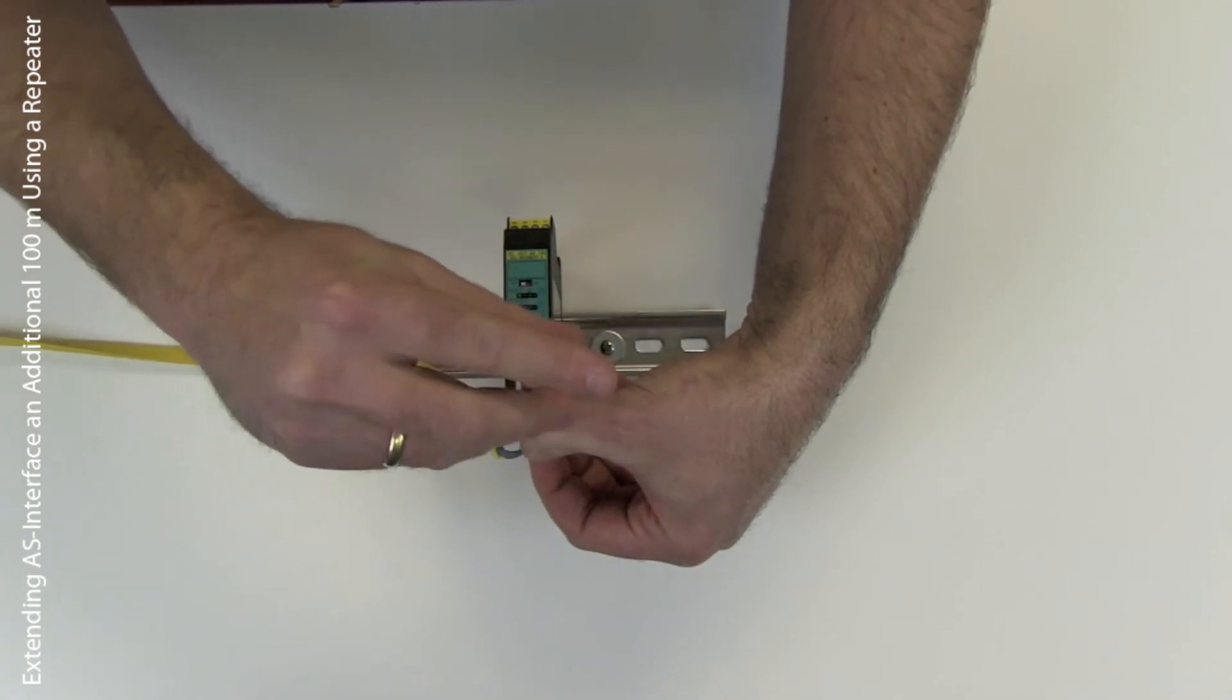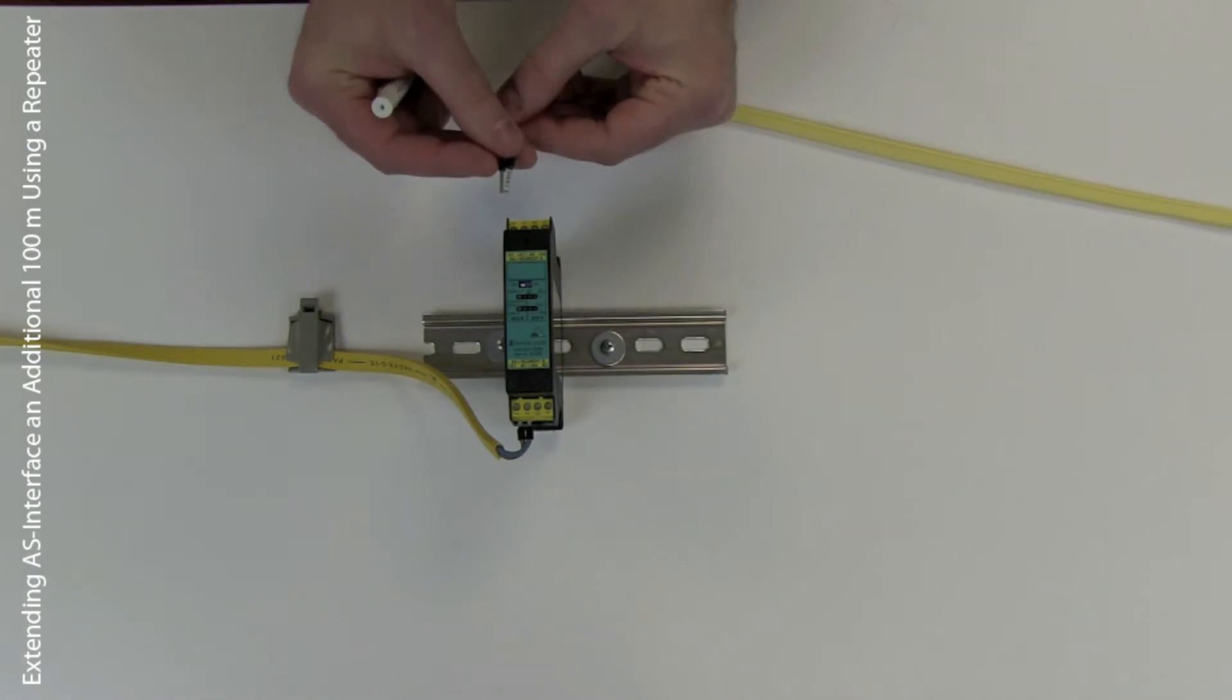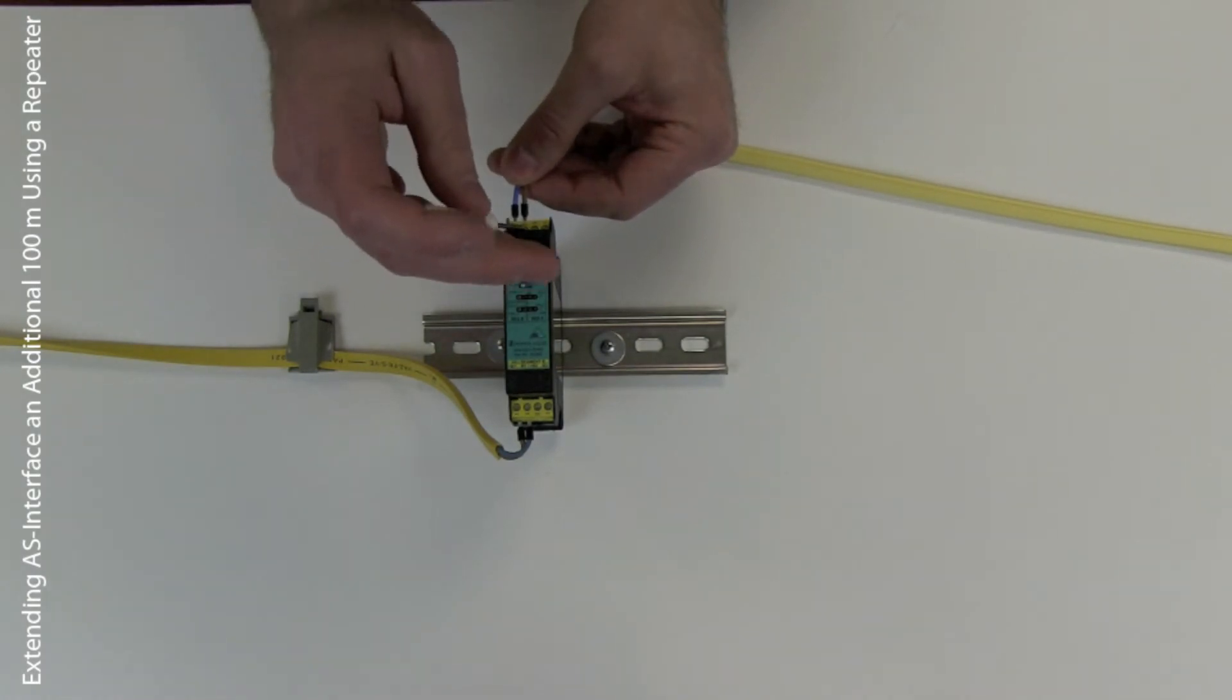So let's attach the ASI segment to the bottom of the repeater. The outgoing 100 meters, or the additional 100 meters, will be then connected to the top of the repeater.